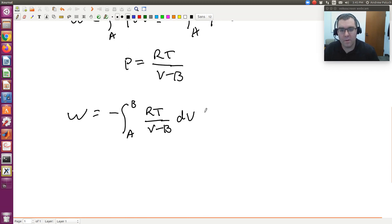So I get W equals the negative integral from A to B. That's my initial and final state—don't confuse B with my second virial coefficient. I have RT divided by V minus B, times dV.